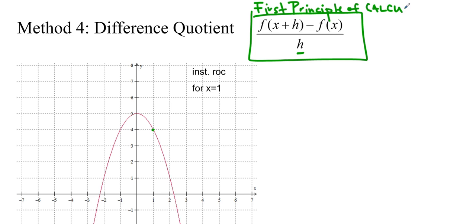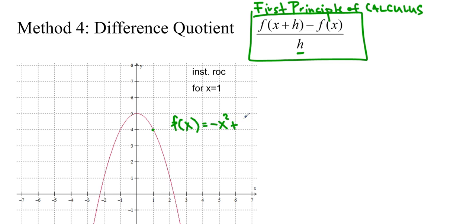It's the best method we have at this stage, so if you have any choice in the matter, you should choose the difference quotient. But on a test they might require the preceding and following interval, so you need to know those too. We can't choose h as 0, because we don't want to divide by 0, but we can choose a number really, really close to 0. To do this, we do need the equation of the function. We'll use a really, really small h — let's say h equals 0.001.